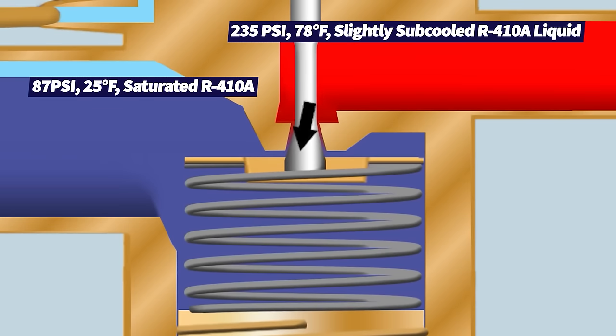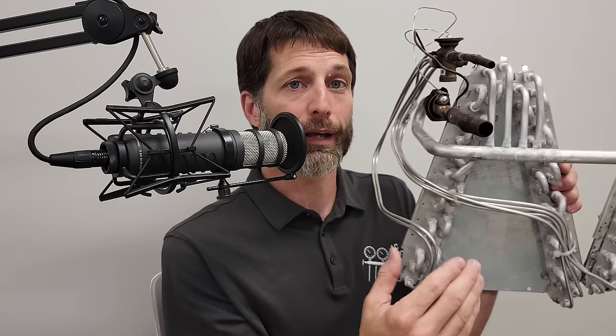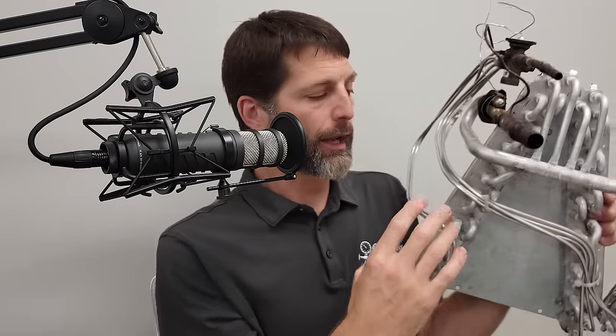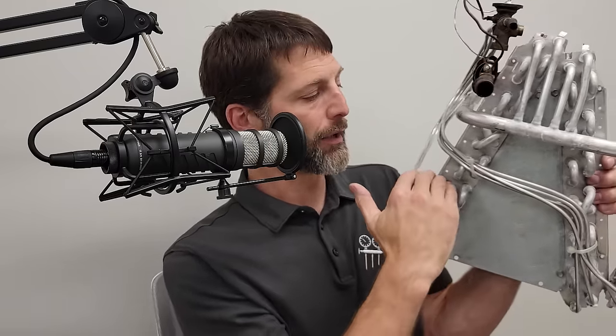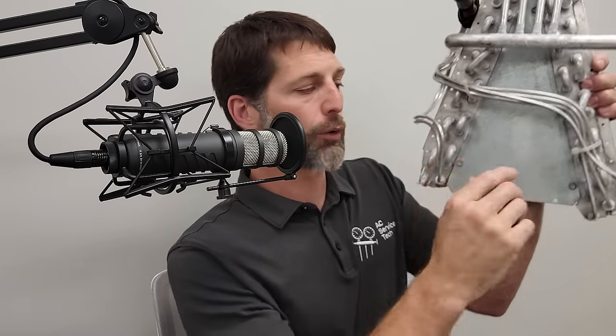When you have a liquid line restriction, the refrigerant is too low in pressure, which means it's too low in temperature. But you'll notice only the lower part of the coil will freeze, because you're going to have high superheat and it will be melted basically in the upper part. It's only going to be frozen in the lower parts where the distributor tubes are entering — that's a telltale sign of a liquid line restriction.